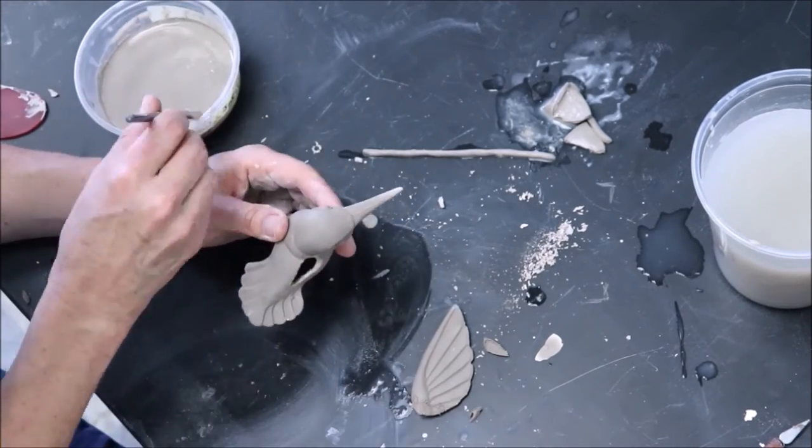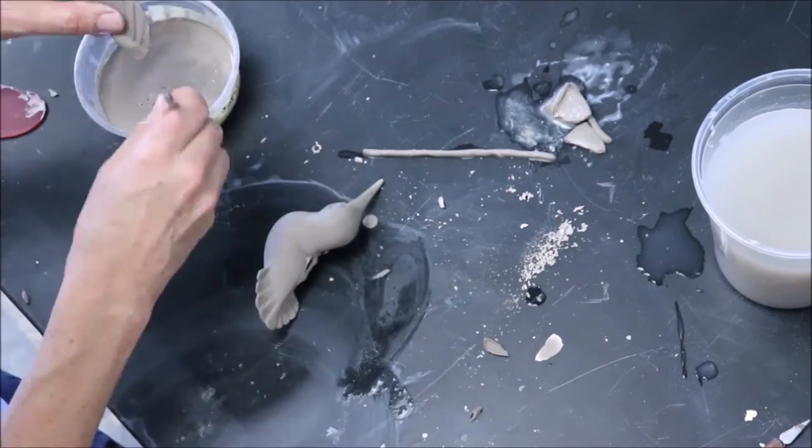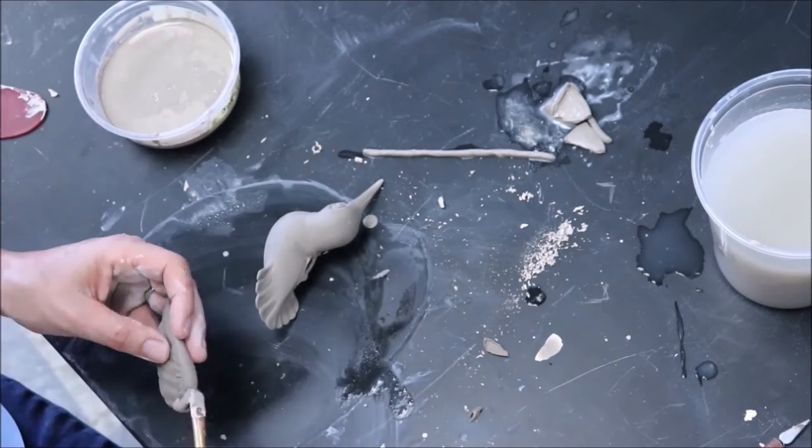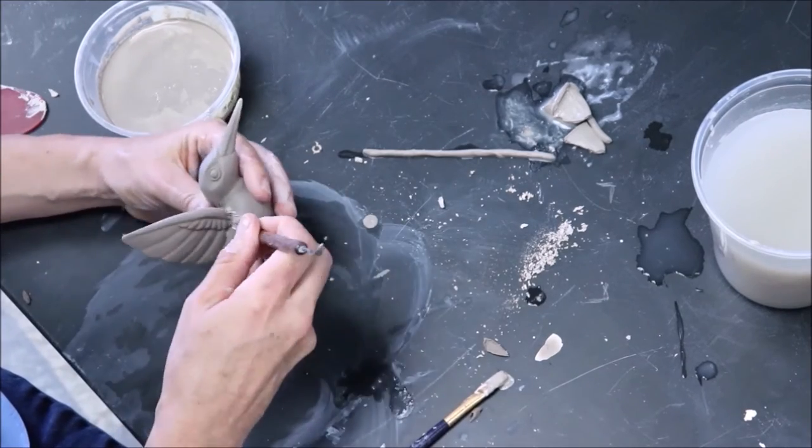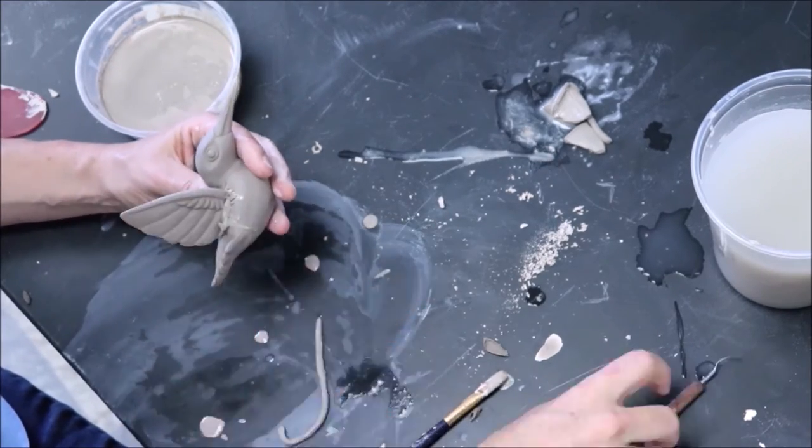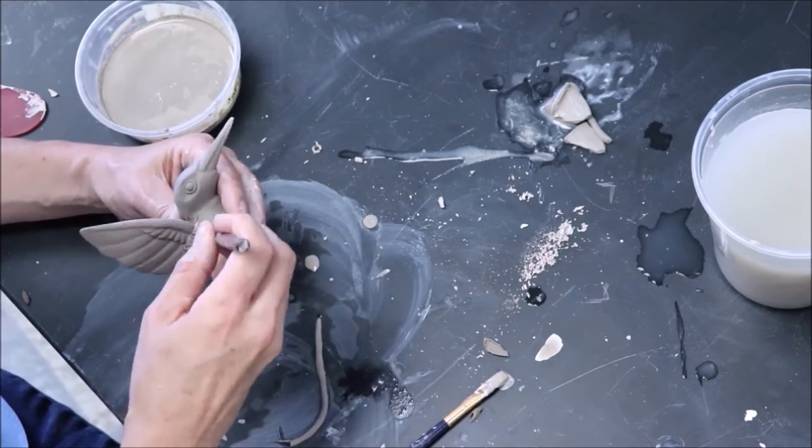This works the same with clay. Therefore, in order to deflocculate the clay particles, we need to render the magnetic charge of the particles all the same. We need to get the clay particles to not attract or stick together.